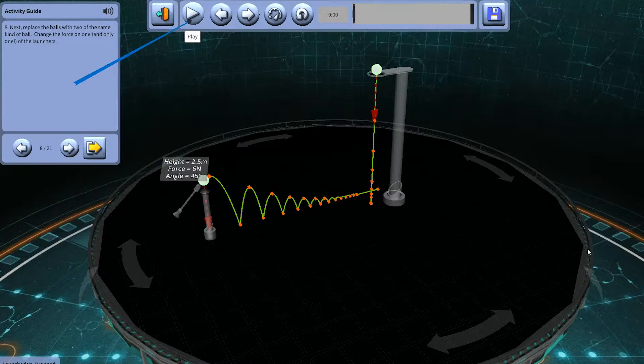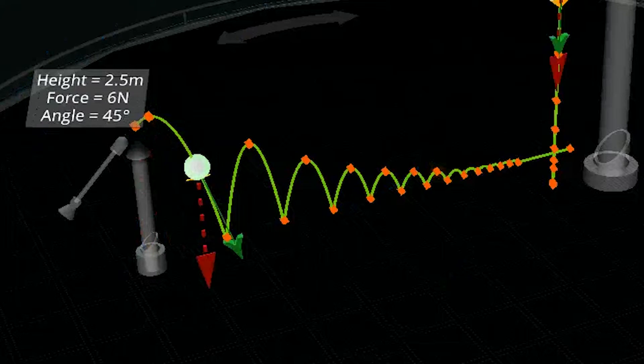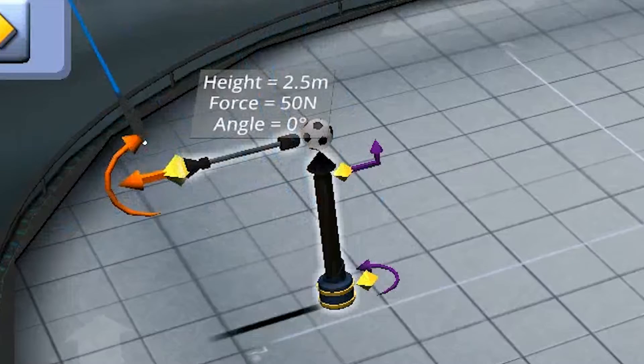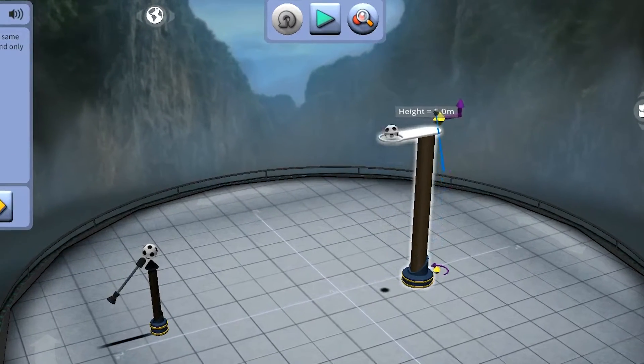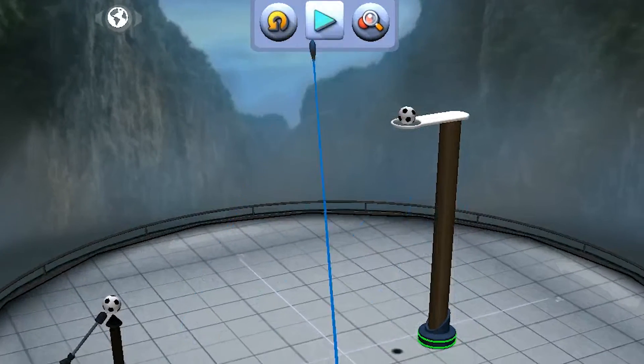We will run several experiments investigating the difference between a ball being launched and being dropped. By testing the force and then the angle of the projectile launcher, changing one variable at a time, we will observe how gravity affects objects.